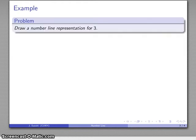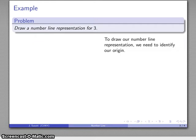Well, let's take a look at that. So let's draw a number line representation for three. So to draw our number line representation, we need to specify some sort of origin. So I'll put a mark down. I'll say here's where I want to start. I want to start there.